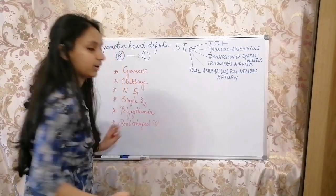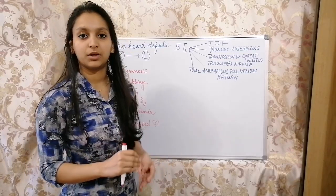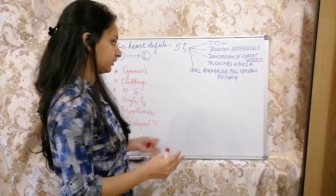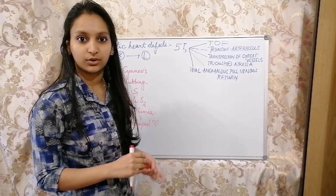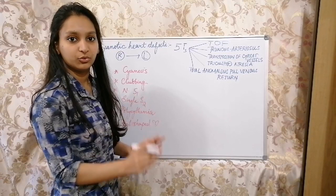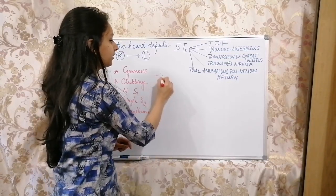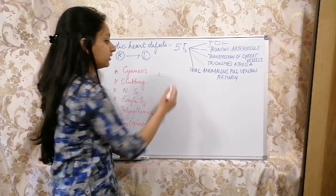The reason for this is because pulmonary artery segment will be absent. In X-ray, you can imagine that it's a kind of boot-shaped heart. This is all about the main clinical features, but I'd like to bring attention towards something known as anoxic spells.